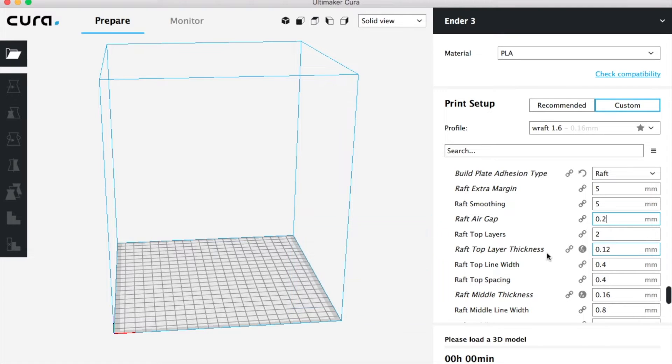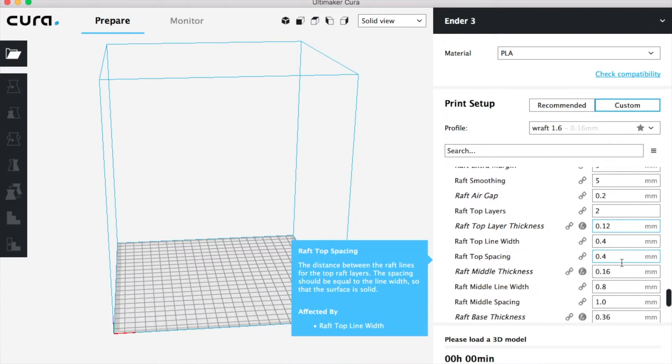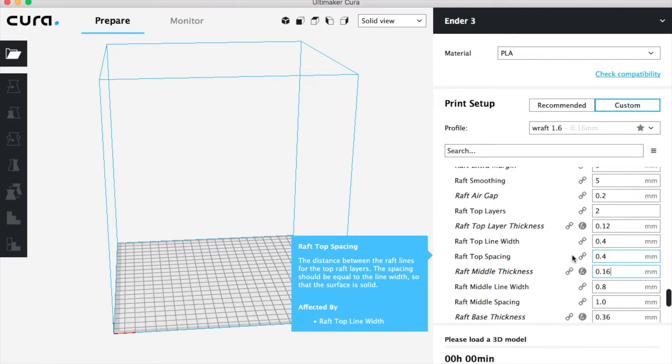And then the next one we're going to do is top layer thickness. This normally you would set it to what your layer height is. So right here 0.12 works, but you can also change it to 0.2, but I noticed that 0.12 works either way. And then the next one we're going to do is the middle thickness. Go ahead and change that to 0.16. And once you do all of these, we're going to go ahead and import a model and go ahead and get it printed.